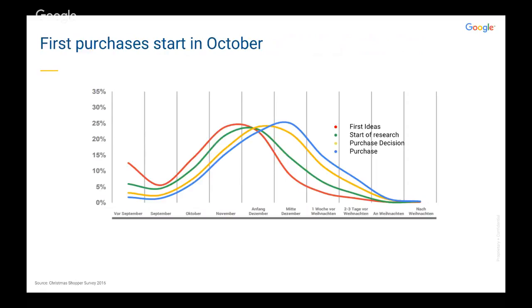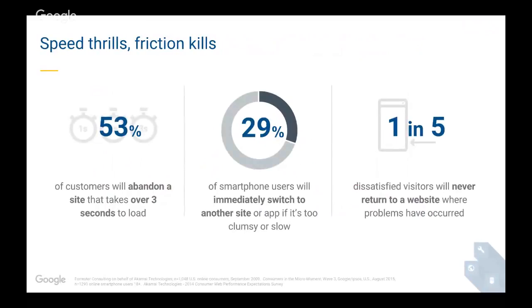Let's have a look at the implications speed has on your mobile user experience. Speed is critical: we lose 52% of customers if our site takes over three seconds to load. Take that stat with a pinch of salt — it may differ by vertical — but even if you only lose 30%, it's still way too many. All those stats relate to measuring speed on 3G, which we recommend optimizing towards.